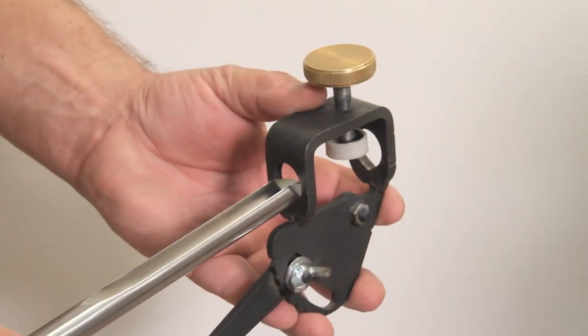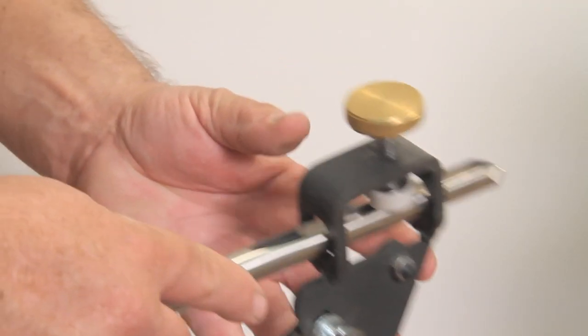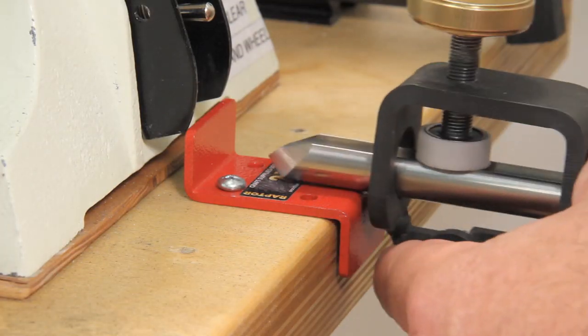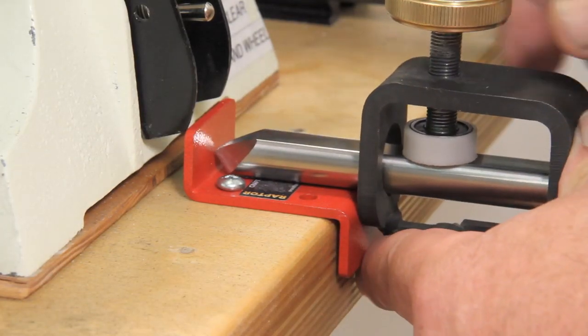To sharpen, place the bowl gouge in the VeriGrind jig. Using the 2-inch Raptor grinding jig, set the tool position and tighten.